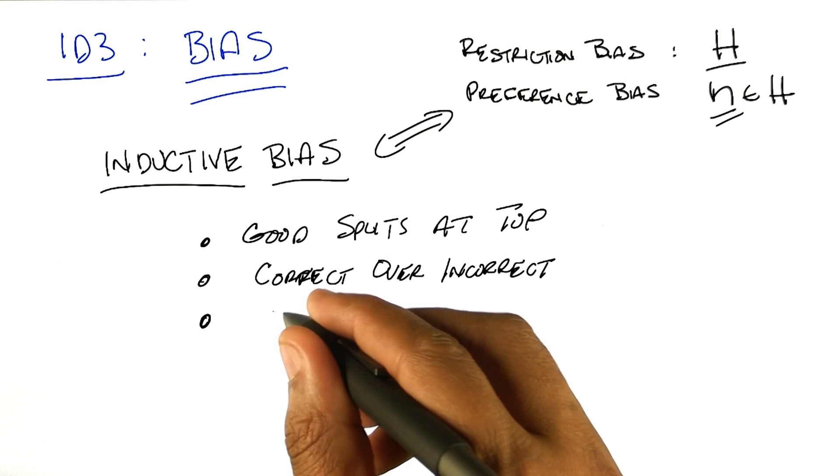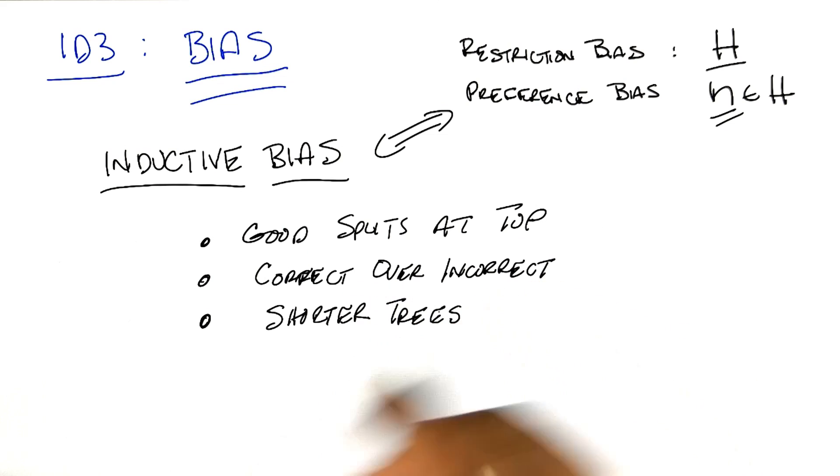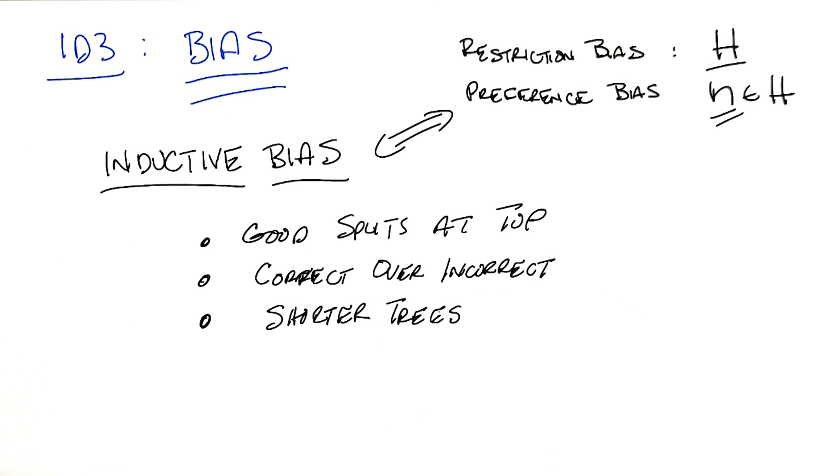Which is ID3 algorithm tends to prefer shorter trees to longer trees. Now that preference for shorter trees actually comes naturally from the fact that you're doing good splits at the top. Because you're going to take trees that actually separate the data well by labels, you're going to tend to come to the answer faster than you would if you didn't do that.